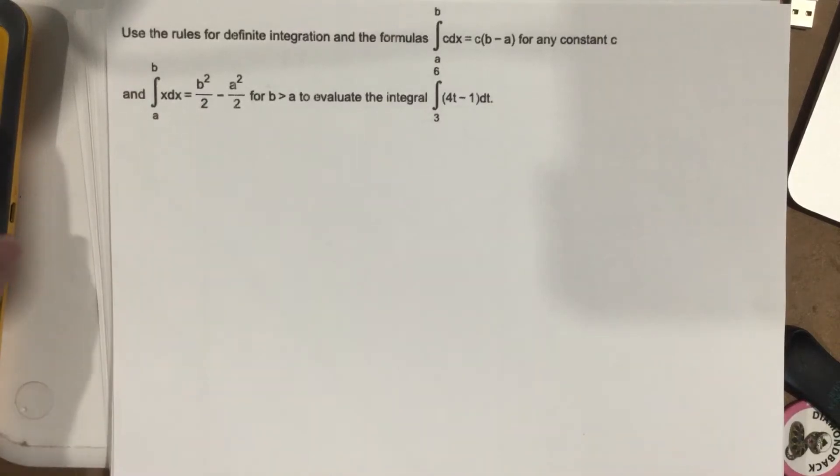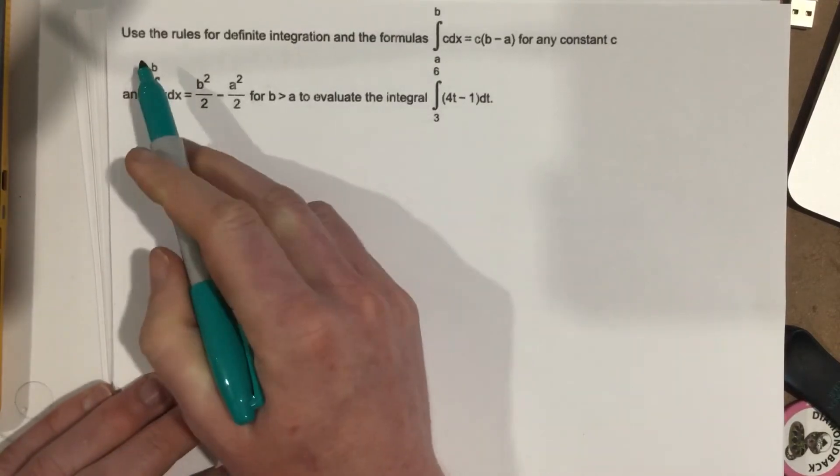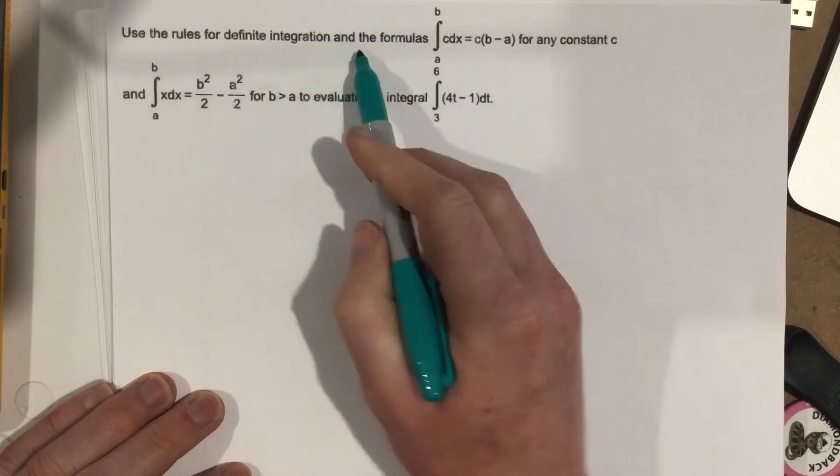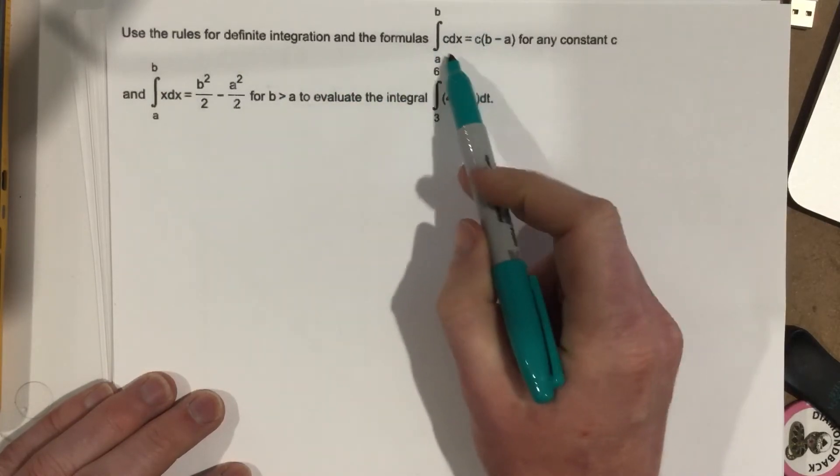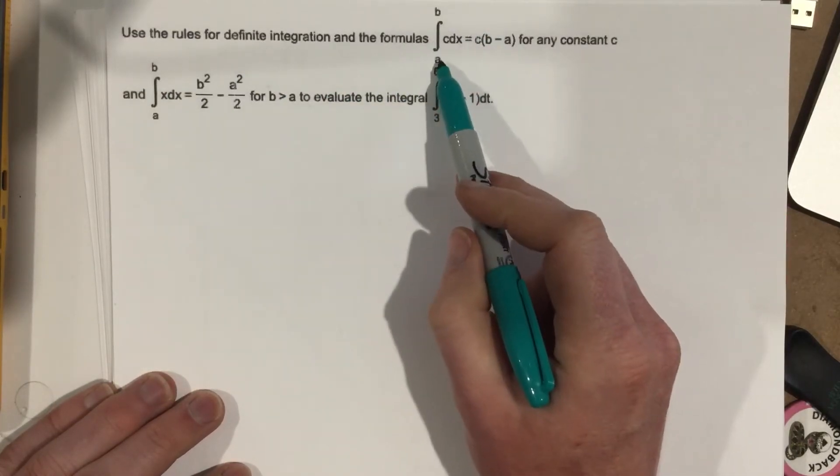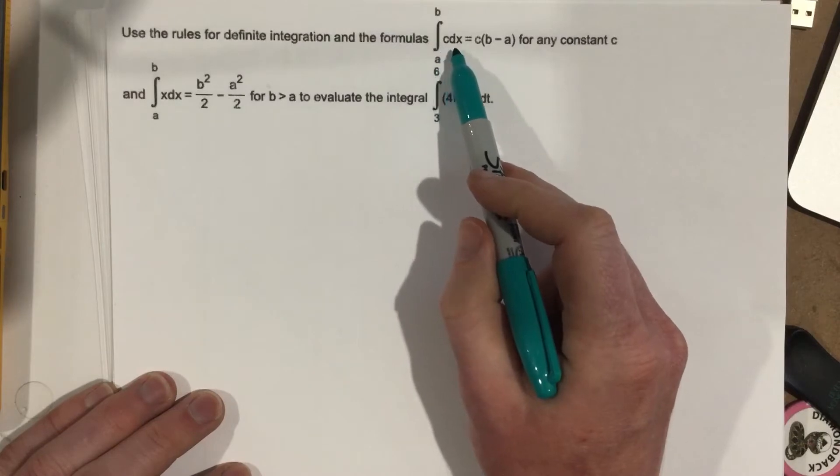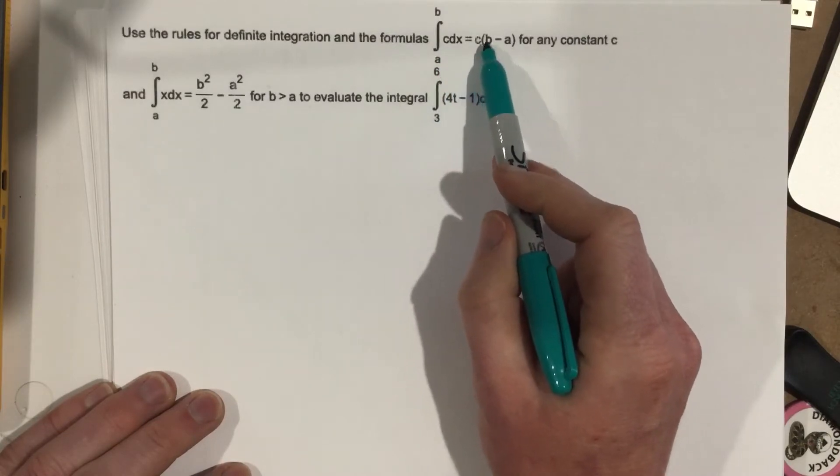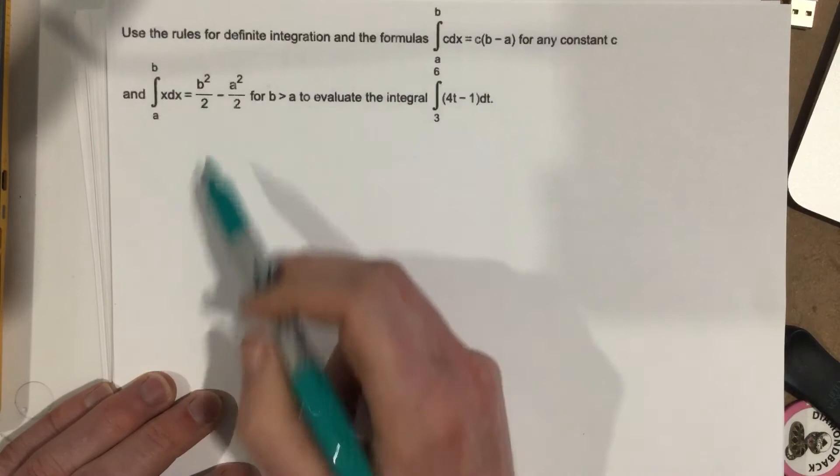This is problem number two from section 5.3. They say use the rules for definite integration and the formulas that they have here. Integral from a to b of c dx is equal to c times (b minus a), so on and so forth.